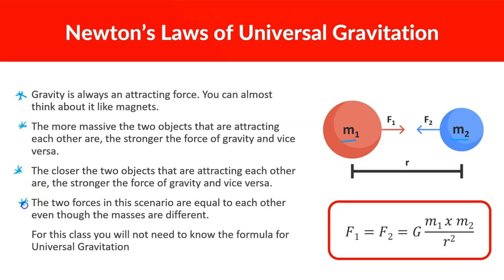The two forces in this scenario are equal to each other even though the masses are different. The Earth is pulling us down, but we are also pulling on the Earth. The Earth is so big that a small force barely moves it, while for us, that same force moves us quite a lot. Everything is pulling on each other with an equal amount of force — it doesn't mean we're moving or accelerating the same amount.